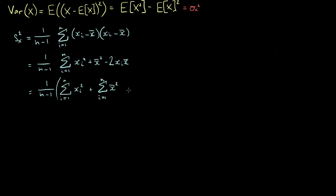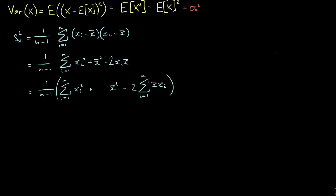We have a third sum: minus 2 times the sum from i equals 1 to n of x-bar times xi. We can simplify the second term — the sum from i equals 1 to n of x-bar squared. Since this sum indexes over i and x-bar doesn't depend on i, we just get n copies of x-bar squared, so we can replace this sum with just n times x-bar squared.